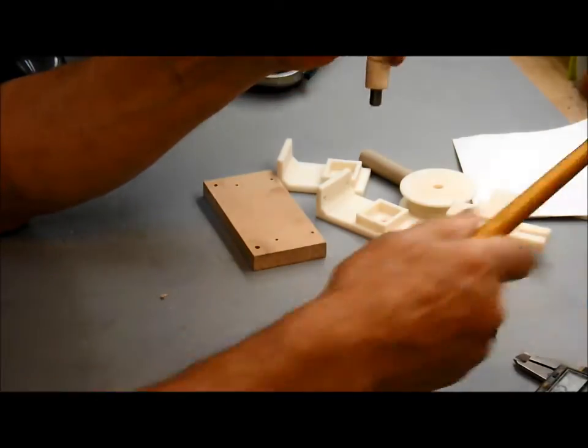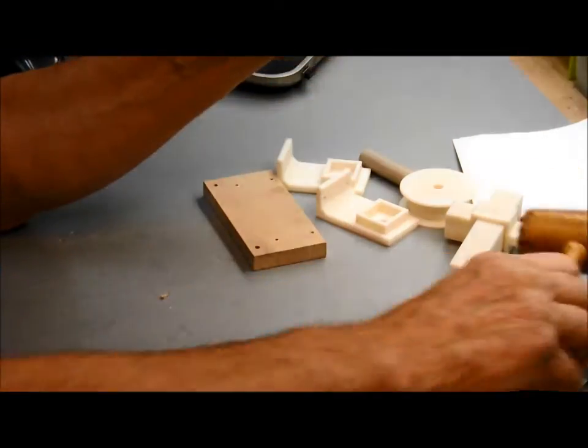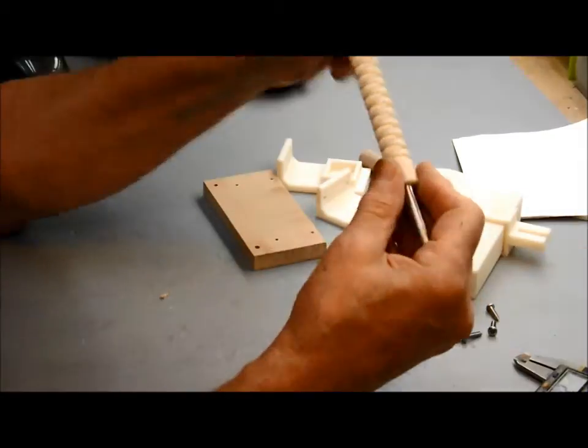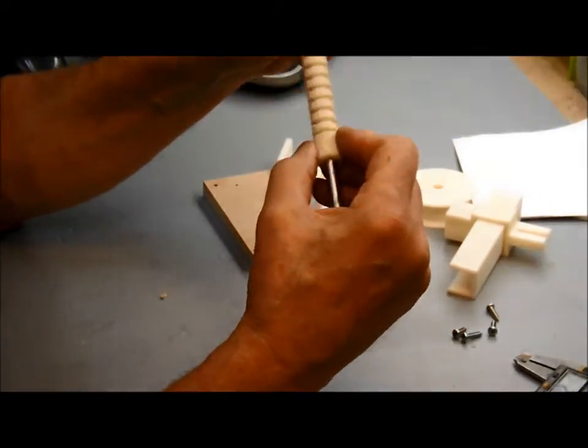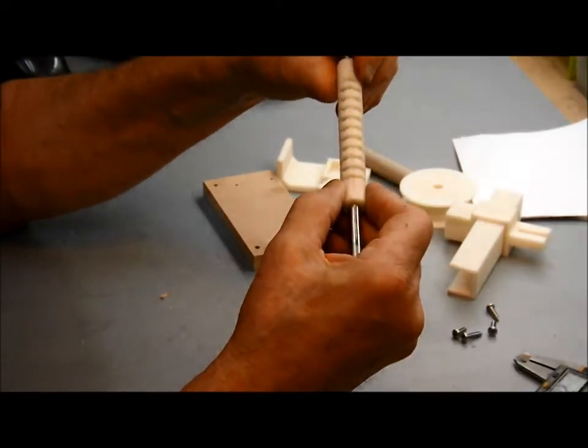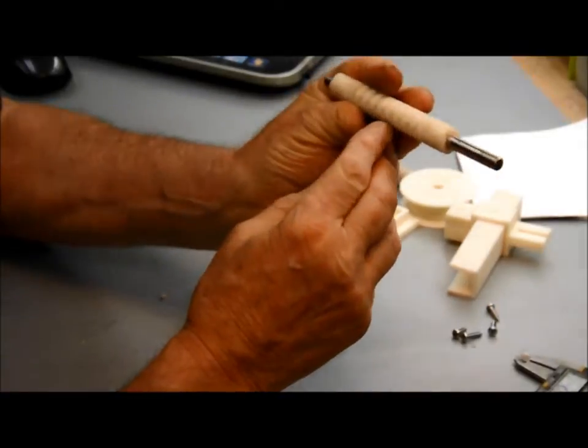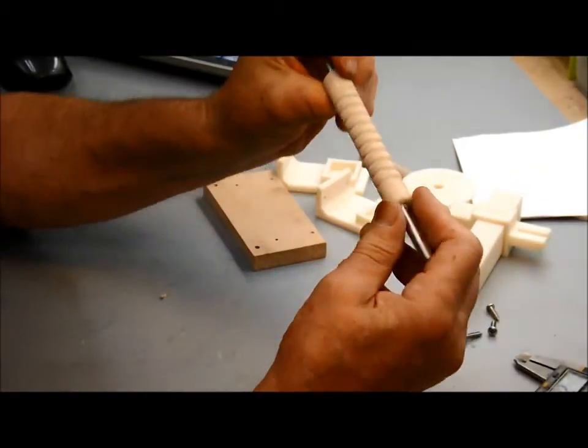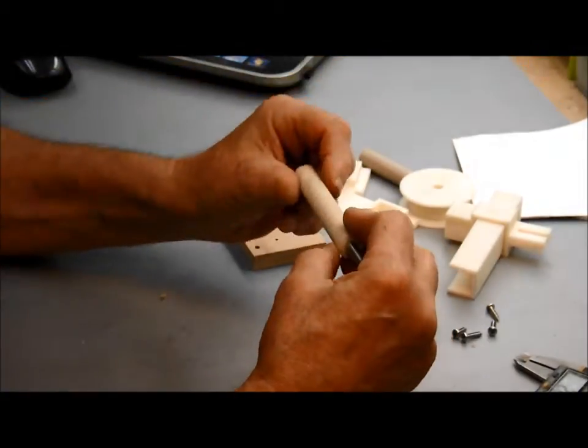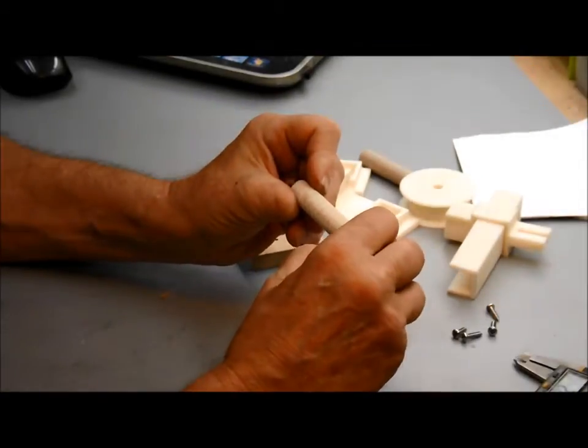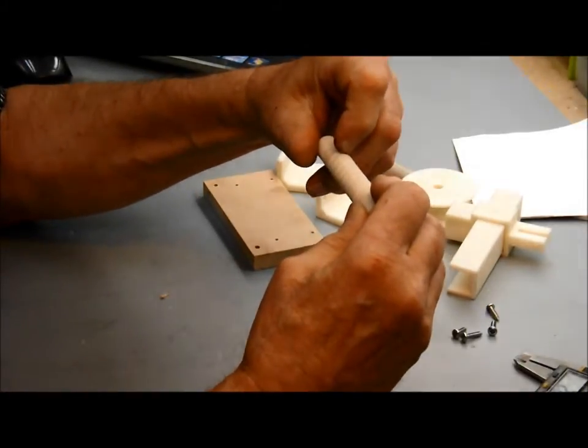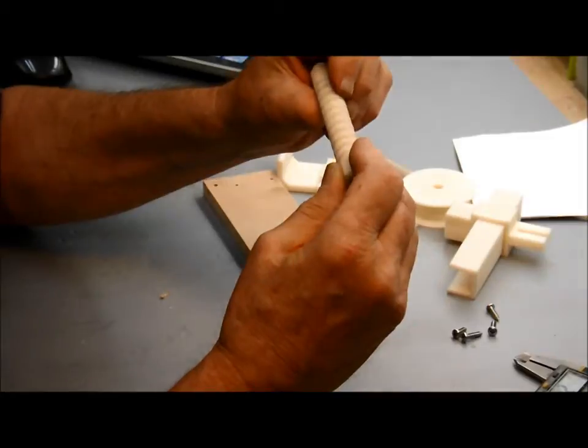Now what I want to point out here, this is a tough part to make really. You got to be real careful not to break off the sharp points of the worm gear units, and so the design on the computer is actually a spacing of two millimeters and two and a half millimeters deep.